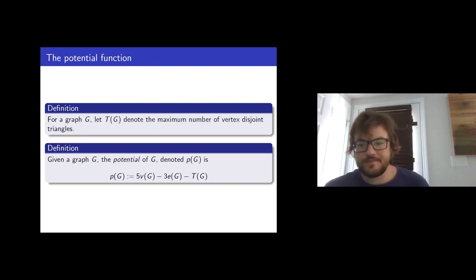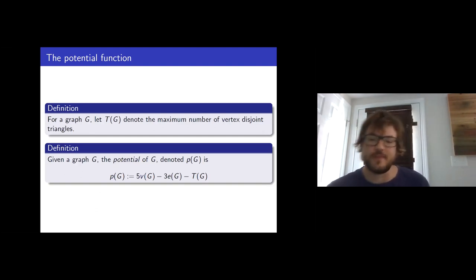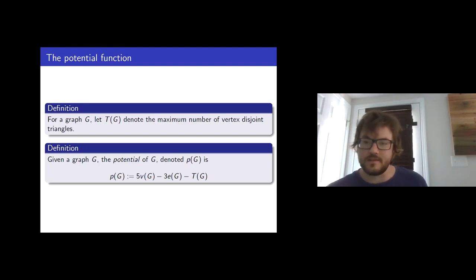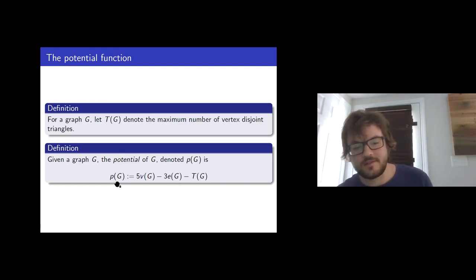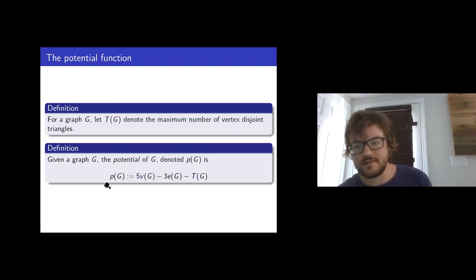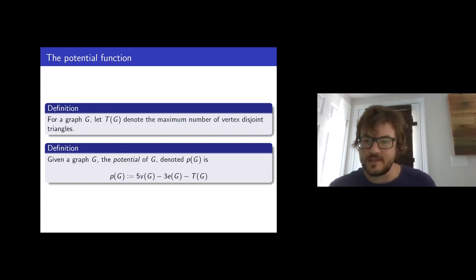We state the theorem in terms of potentials. First define t(G) as the maximum number of vertex-disjoint triangles in the graph. The potential of a graph is 5|V| - 3|E| - t(G). Without the triangle term, if the potential is positive the average degree is less than 10/3, and if negative the average degree is bigger than 10/3 — it's basically a metric of how close your average degree is to 10/3.